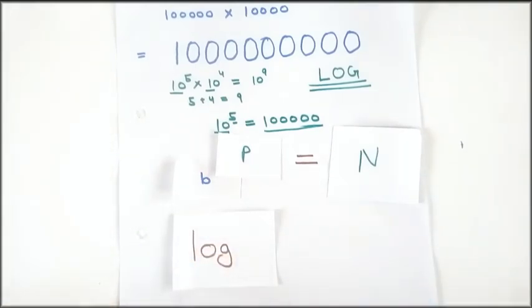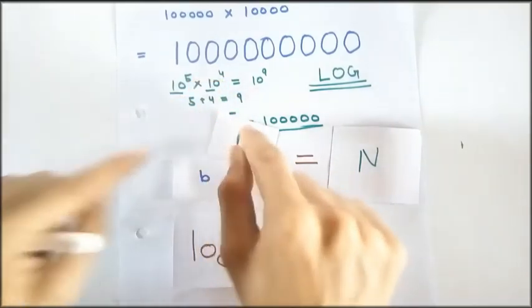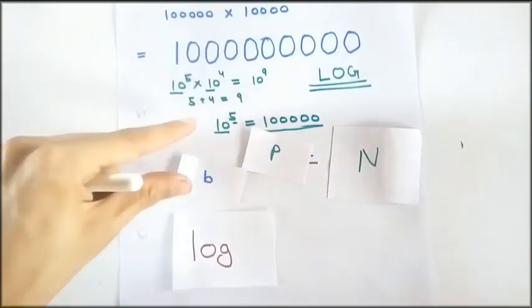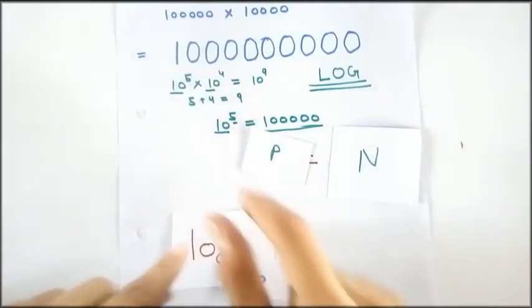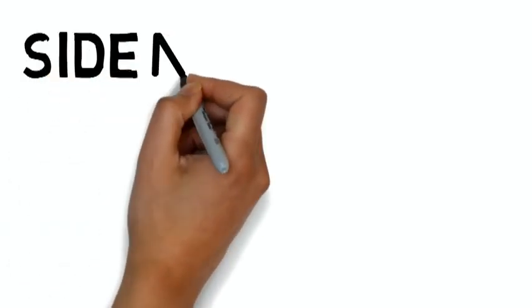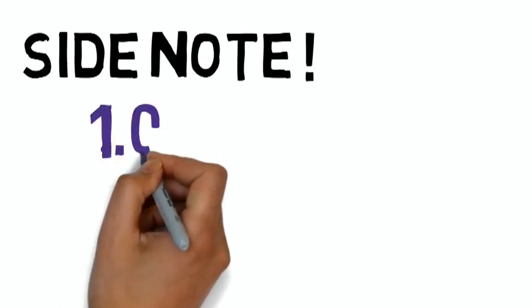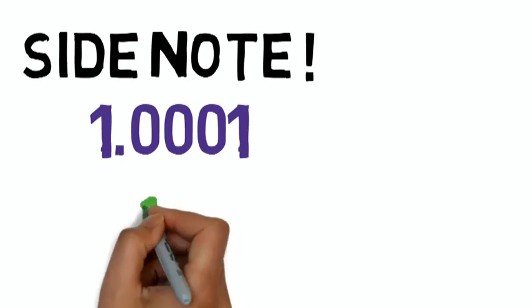Now what happens is that the base, that is 10 in here, then the base comes down to the log. And 10 is the most common base for the log, that is base 10 logarithm tables. A quick side note: John Napier used the base 1.0001. I am talking about the base 10.